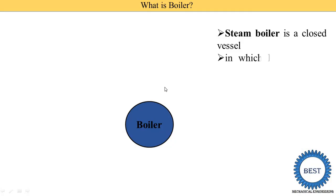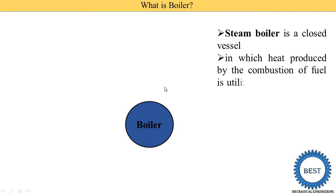In the boiler, heat is produced by the combustion of fuel. Some fuel is burned — it may be coal, it may be wood, it may be oil. This combustion of the fuel produces heat.